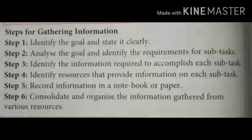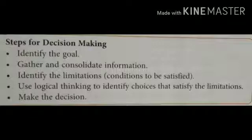Now, there are 5 steps for decision making also. First one is identify the goal. Number 2: Gather and consolidate information. Number 3: Identify the limitations or the conditions to be satisfied. Number 4: Use logical thinking to identify choices that satisfy the limitations.